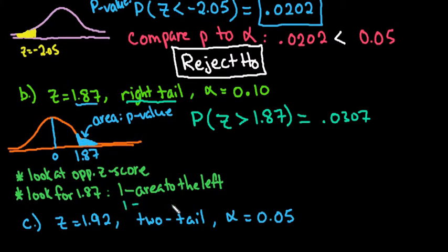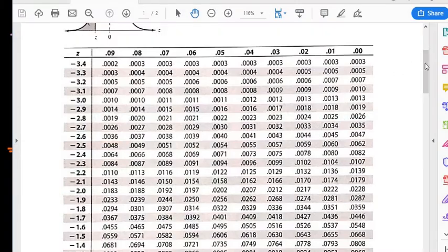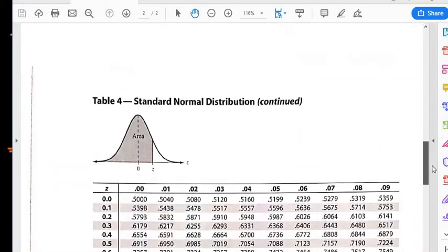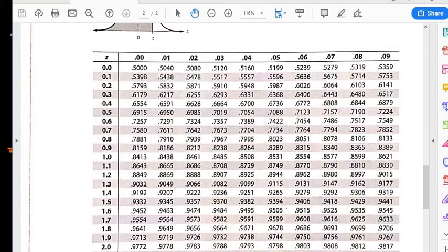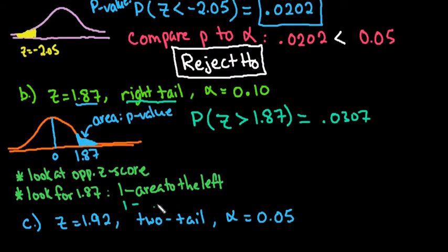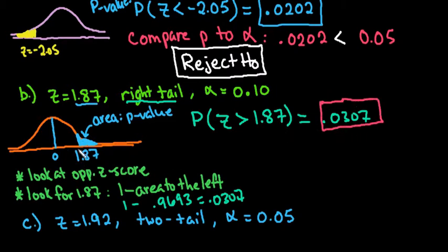Had you used the 1-minus method, you would go to positive 1.8 and find the 7, getting 0.9693. Then 1 minus 0.9693 gives you 0.0307 — the same answer. The reason I prefer the opposite z-score method is that the area to the right of positive 1.87 equals the area to the left of negative 1.87, so it gets you to the answer quickest.